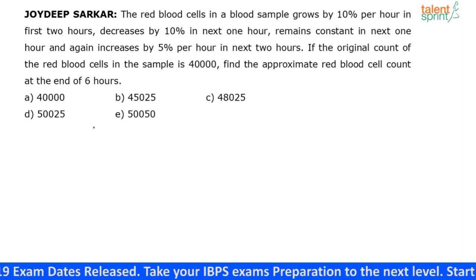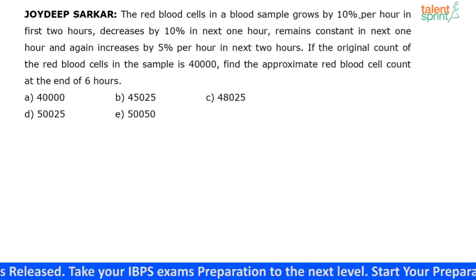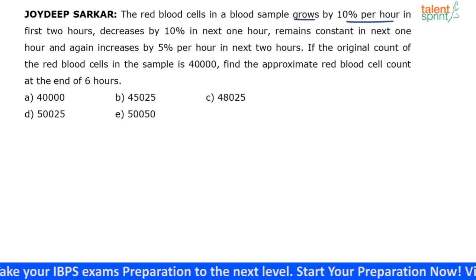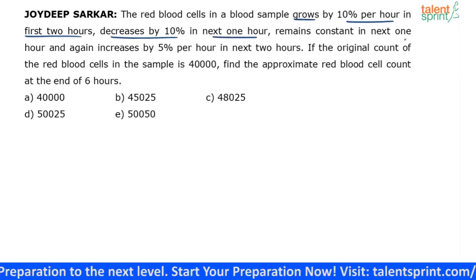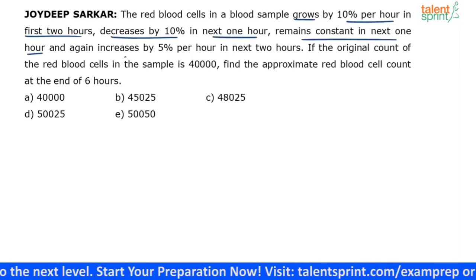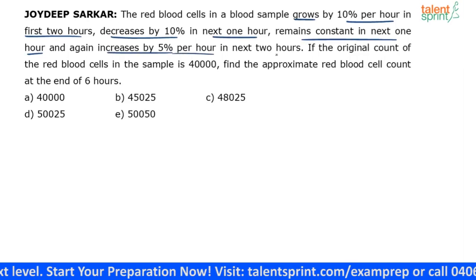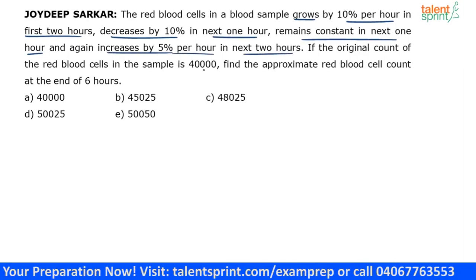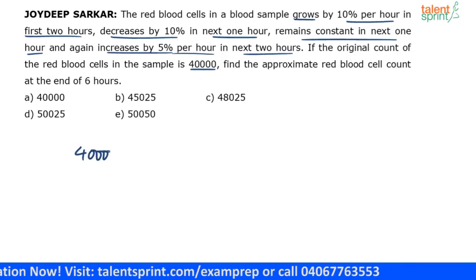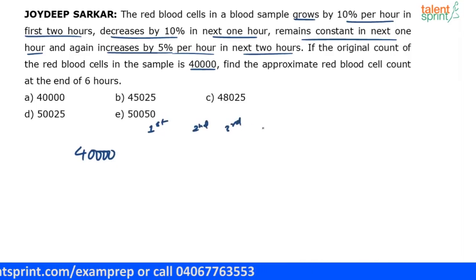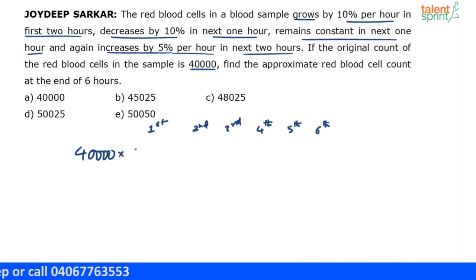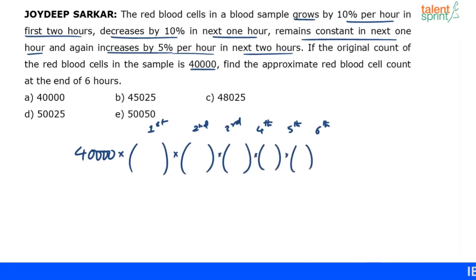It's simple — you just have to understand what happens over the period of six hours. It grows by 10% per hour in the first two hours, decreases by 10% in the next one hour, remains constant in the fourth hour, and increases by 5% per hour in the next two hours. The original count is 40,000. You multiply based on how it is increasing or decreasing each hour and simplify to get the required answer.